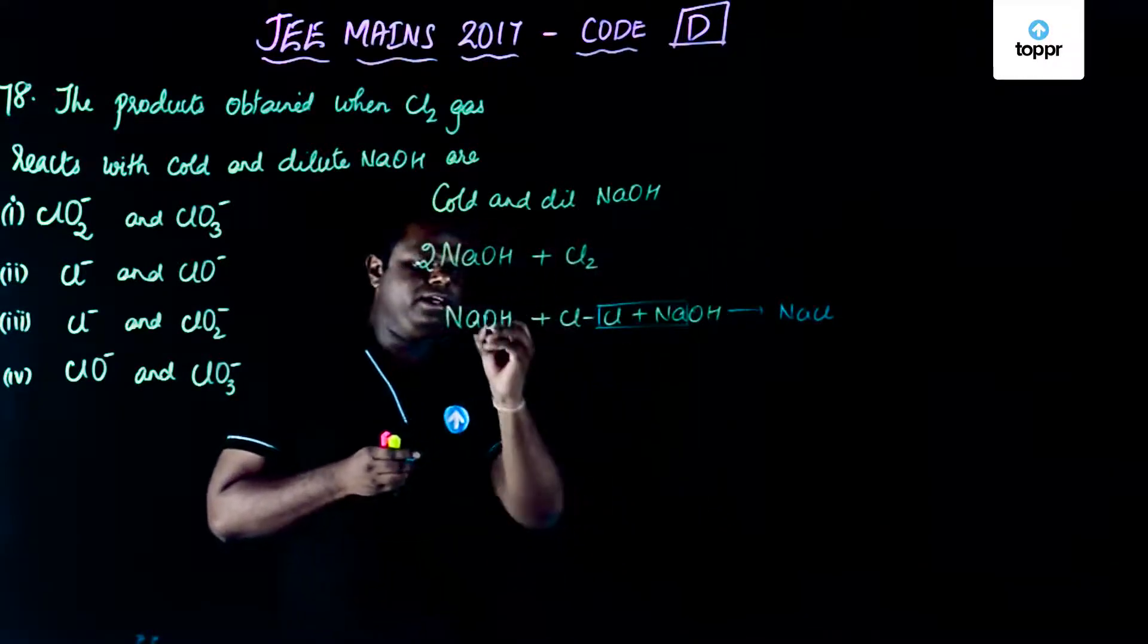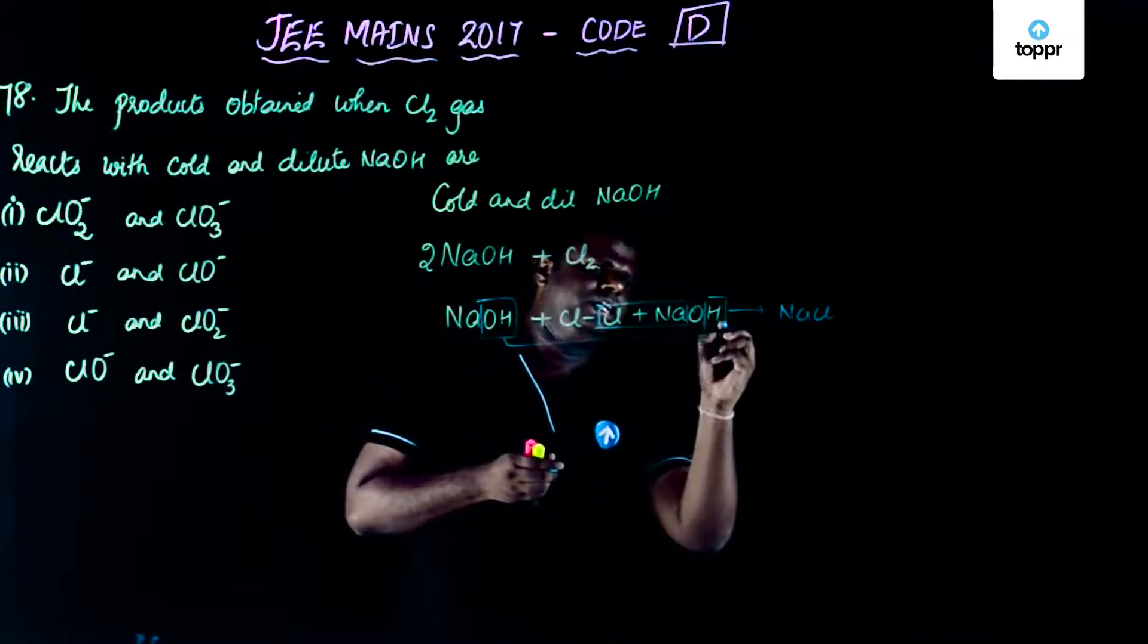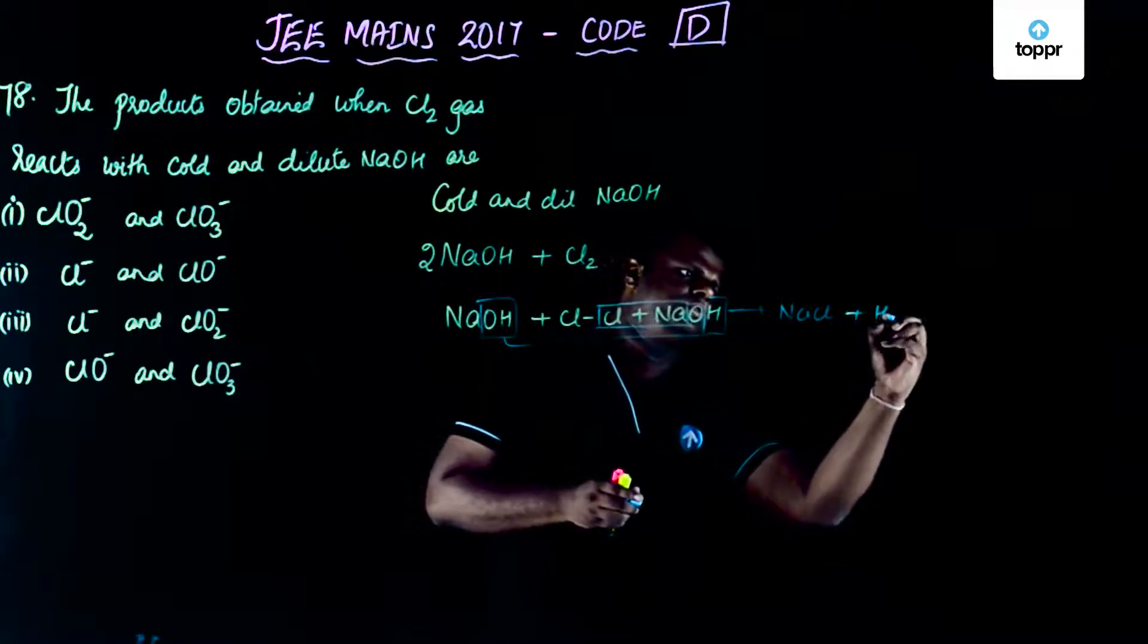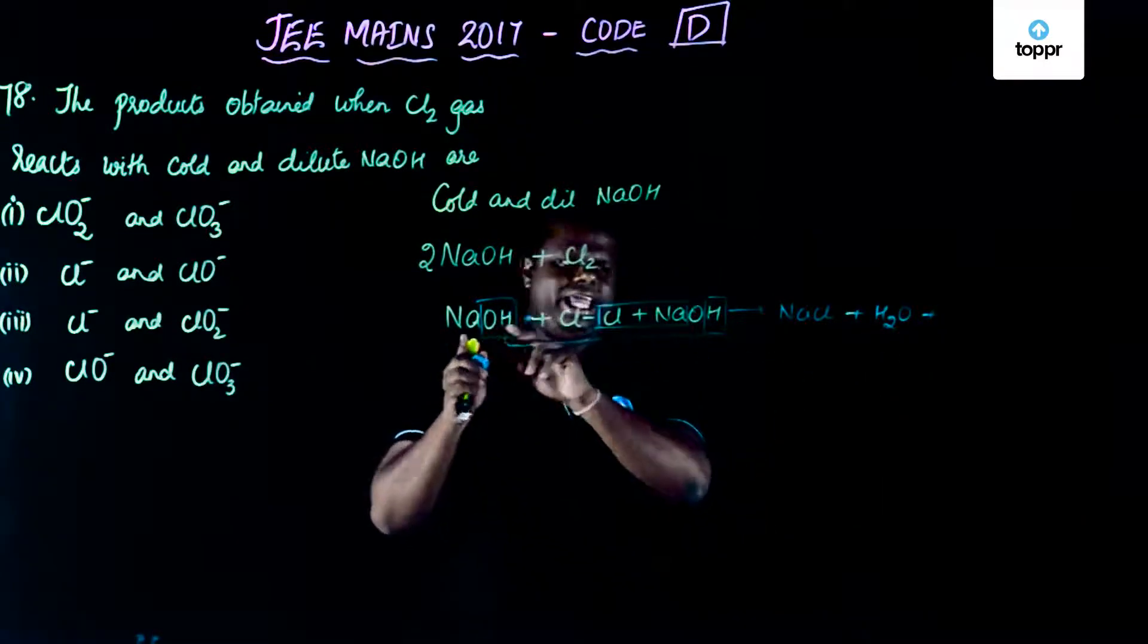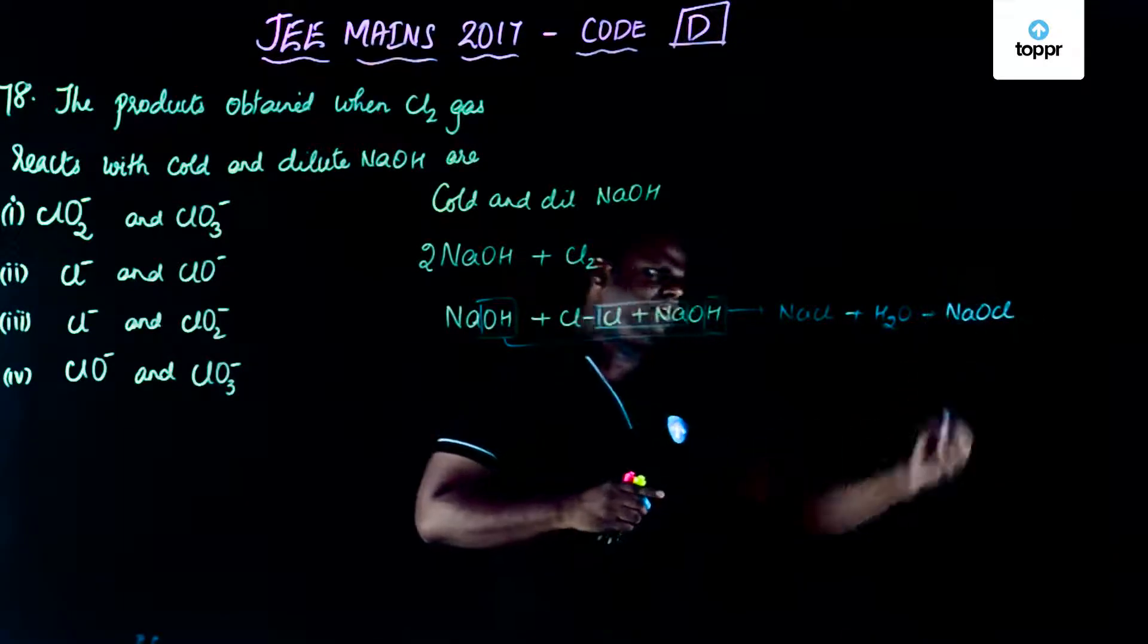And then OH goes with H forming H2O, and finally you are left with NaClO, or you could simply write it as NaOCl.